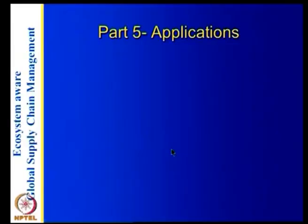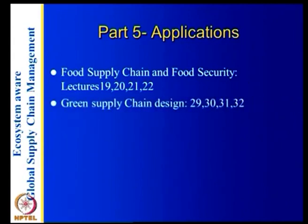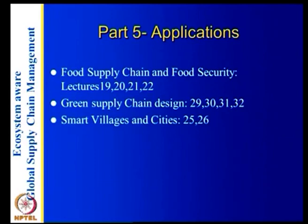Part 5 is applications. In the book, there are three applications: the food supply chain and food security — with four lectures — particularly important in countries with huge populations where food supply chains are fragmented. We talk about how to use ICT technologies to improve food security. We also cover green supply chain design and smart villages.